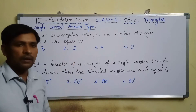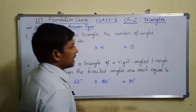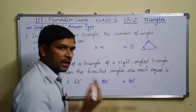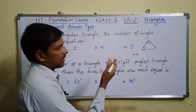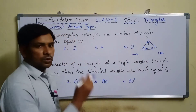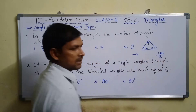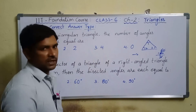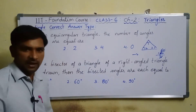In an equiangular triangle, all three angles are equal. Since the sum of angles of a triangle is 180 degrees, dividing by three gives us 60 degrees for each angle. So there are three equal angles, each equal to 60 degrees.